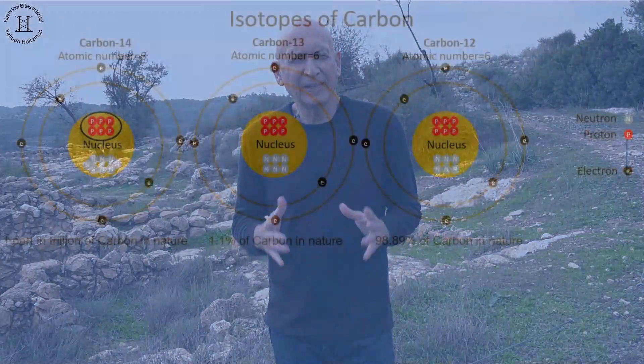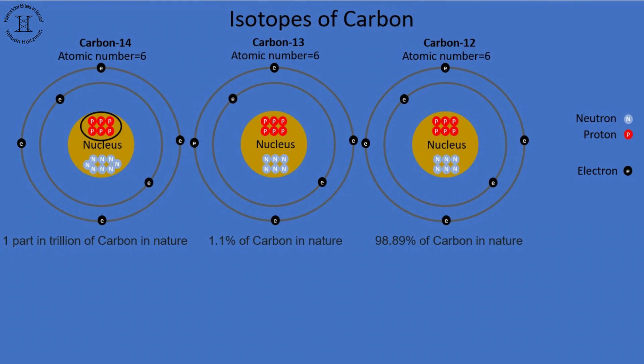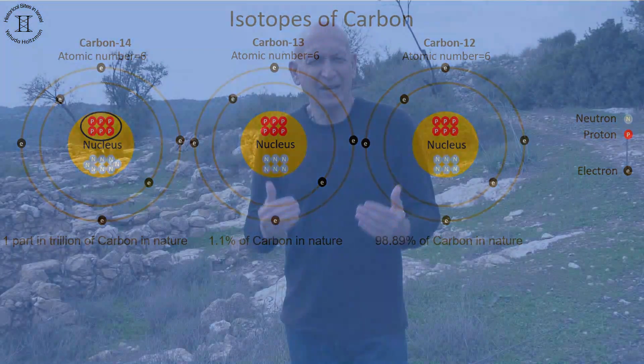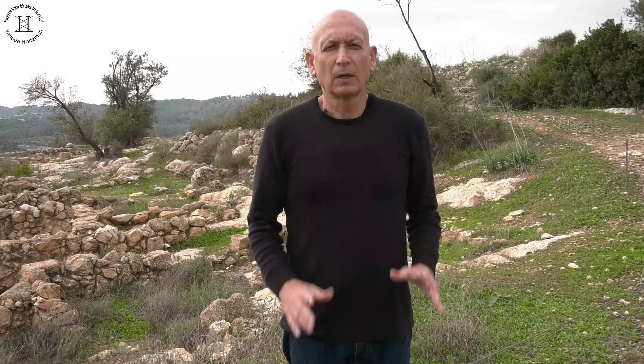Second note: as long as the organic being is alive, it breathes. And thus, the three isotopes maintain a constant ratio as in the atmosphere. When it dies, carbon no longer penetrates. The decay process of carbon-14 begins, and everything I explained occurs.